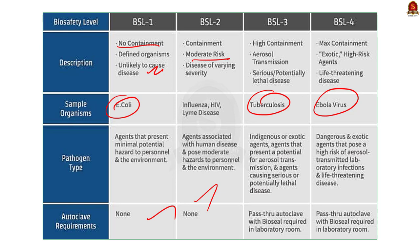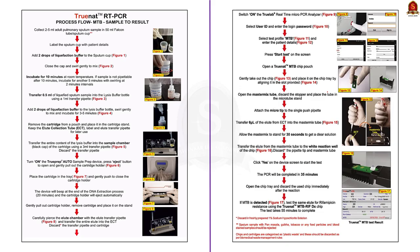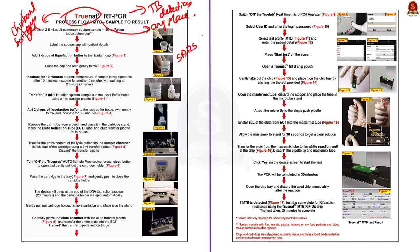Now let us see some points about the TrueNAT test. TrueNAT is a portable, chip-based, and battery-operated machine developed by a Goa-based company. It was originally developed to detect tuberculosis, and with TrueNAT we can test samples at any place and get results within one hour. WHO has approved TrueNAT for detecting TB as it is easily portable and cost-effective. Later, TrueNAT was also used to detect COVID-19, and now ICMR has allowed the Kerala government to use TrueNAT for detecting Nipah virus infection.